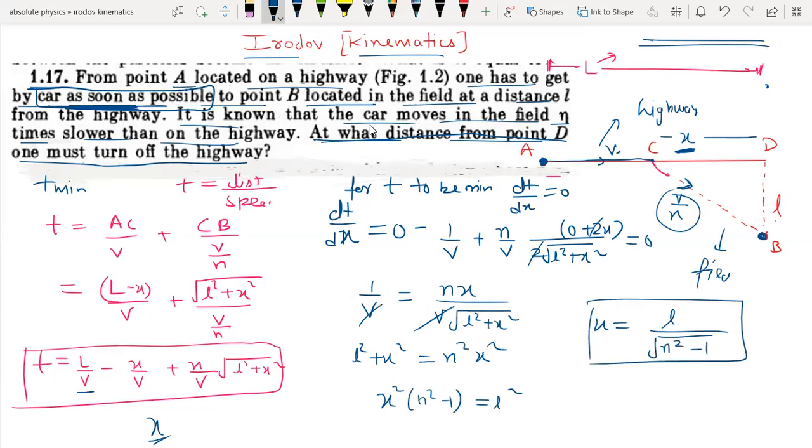So we have found that if we turn at this distance, we will reach point B in minimum time. N is given, which tells how much the speed is reduced, so we can easily find and calculate this. I hope you all understood this question. Thanks for watching.